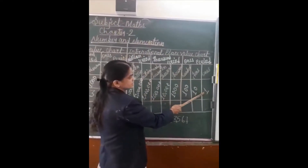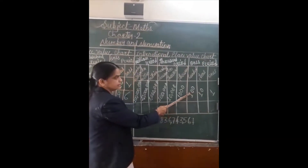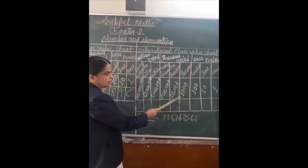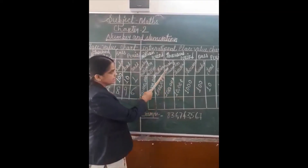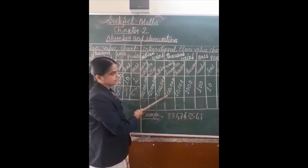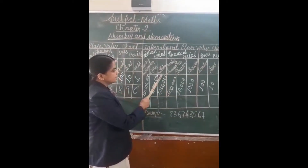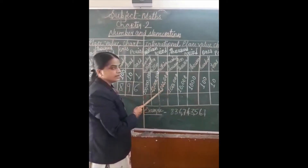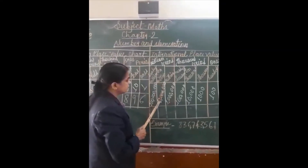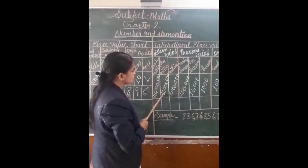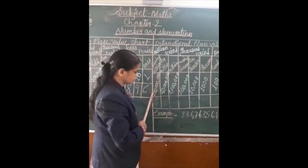In ones, single digit. Tens is two digits, hundreds is three digits, thousands is four digits, ten thousands is five digits. Hundred thousands is six digits and is equal to one lakh. Millions is seven digits and is equal to ten lakhs. Ten millions is equal to one crore. And hundred millions is equal to ten crores.